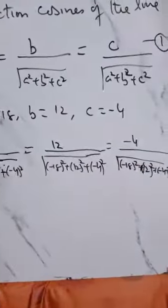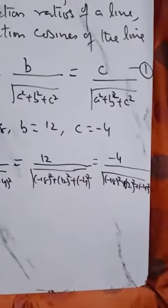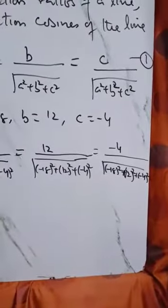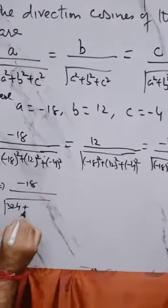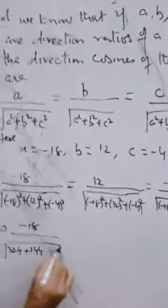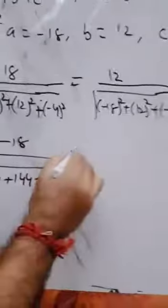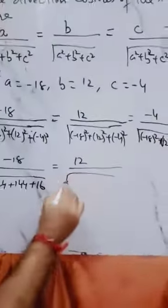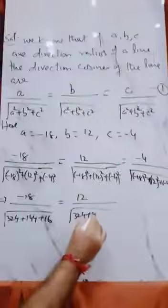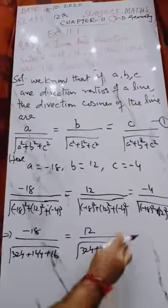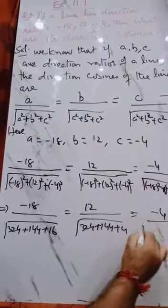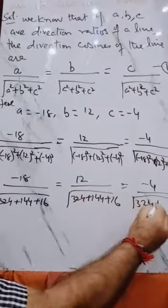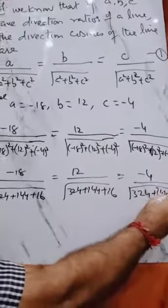Further next step, minus 18 upon 18 square is 324, 12 square is 144, and 4 square is 16. Same here, 12 upon 324, 144, and 16. Next, minus 4, same root 324, 144, and 16.